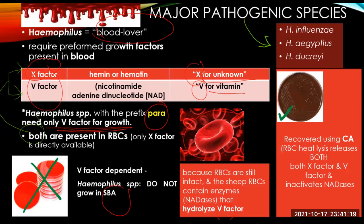Both X and V factors are found inside erythrocytes; however, only the X factor is directly available. To recover these organisms, clinical laboratories utilize chocolate agar. The lysing of RBCs by heat in the preparation of chocolate agar releases both X and V factors and inactivates the nadases — inactivation of the nadases is very important. Please remember this slide, as you can have many questions from it on your post-test and long quiz.